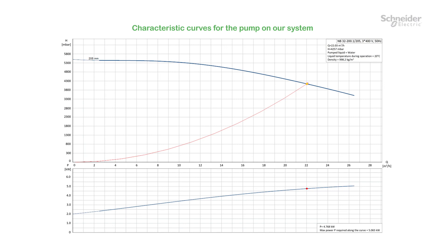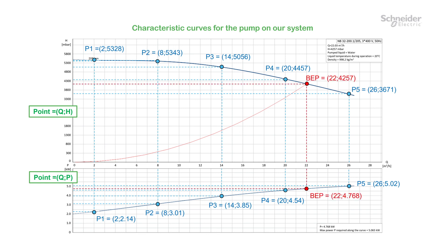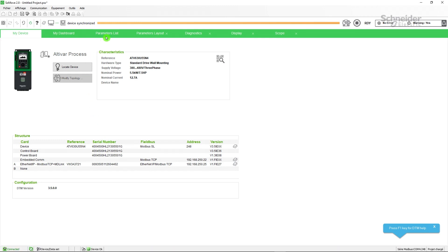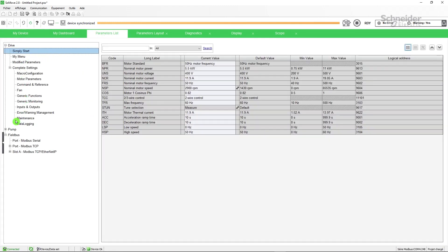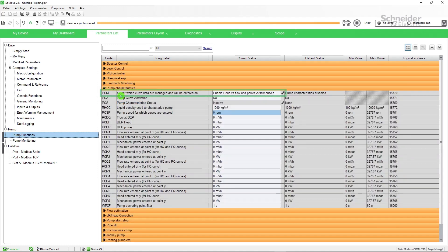On the pump manufacturer curves, choose five points sufficiently spaced and identify their coordinates and those of the BEP: P in kilowatt, Q in cubic meters per hour, and H in millibar. These coordinates will allow us to enter the curves in the drive. Set the points with SoMove. Go to pump characteristics menu on SoMove software.